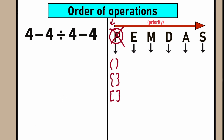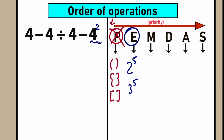The next step after parentheses is exponents — the basic power. For example, 2 to the power 5, or 3 to the power 5. If we had something like 4 squared, we would need to evaluate that first. In our case we don't have 4 squared, 4 cubed, or any exponents, so we can skip this part as well.